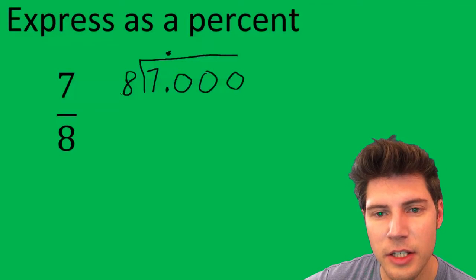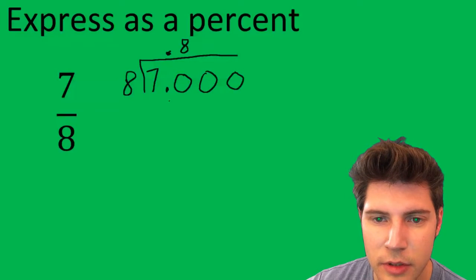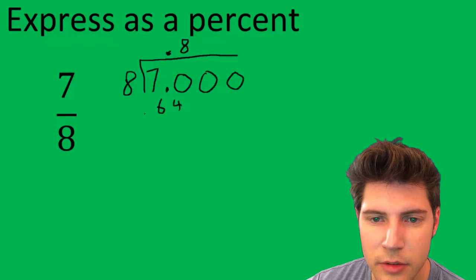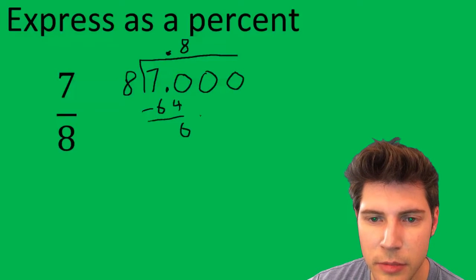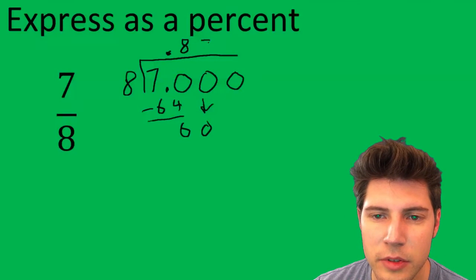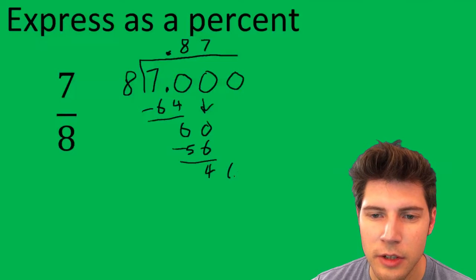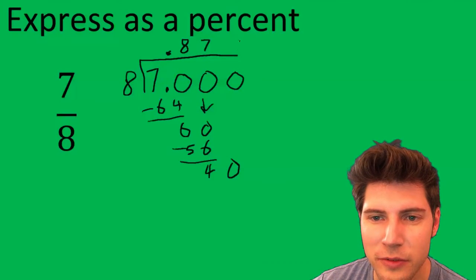How many times does 8 go into 70? 8 times. Bring down the 0. How many times does 8 go into 60? 7 times. And how many times does 8 go into 40? 5 times.